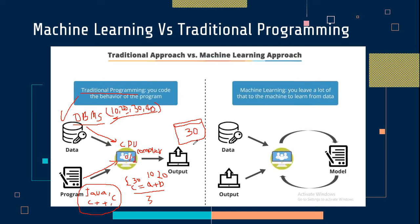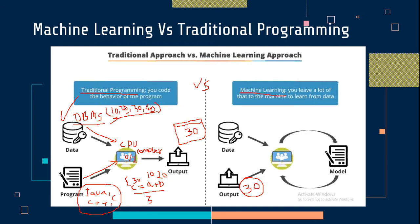Now, in contrast to that, what happens in a machine learning approach? In machine learning, first you have to give what is your expected output — what is your expectation. Here I am giving my expectation that I want an output like 30. So I am giving my expected output; I am not saying how to compute it.